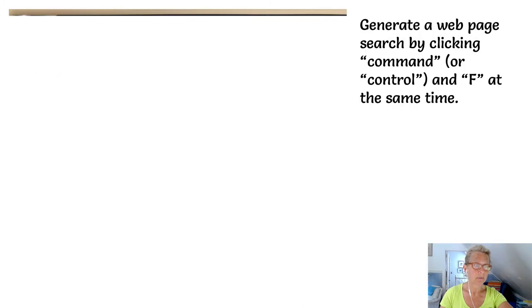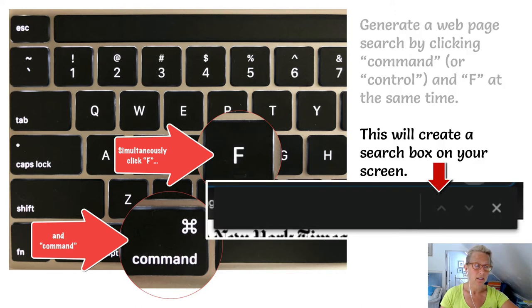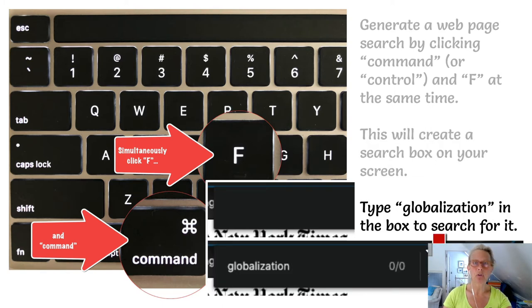If I was to generate a search by holding the Command and F button, it would bring up this little search box — I hope you guys know that trick, it's a good one. And if I type the word 'globalization' into that search box and did a search, you would notice...